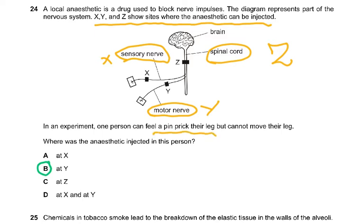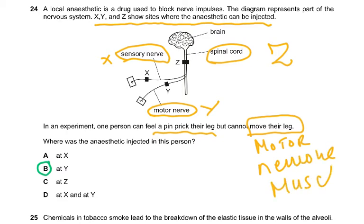In the experiment, one person can feel a pinprick in their leg but cannot move their leg. To move the leg you need a motor neuron going to a muscle. So the motor neuron has been blocked at Y — the blockage is at Y. The person can still feel the pinprick, meaning the spinal cord and brain are intact; information has gone to the brain. The brain is sending impulses to the motor neuron, but the anesthetic applied at Y prevents leg movement.